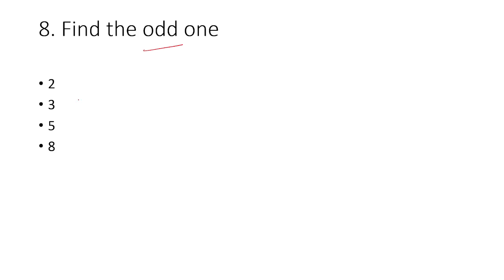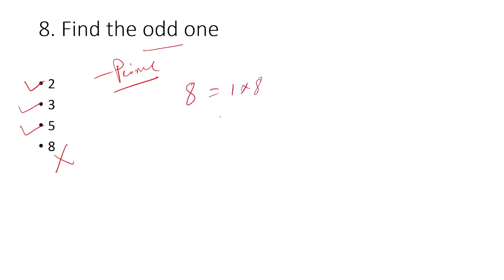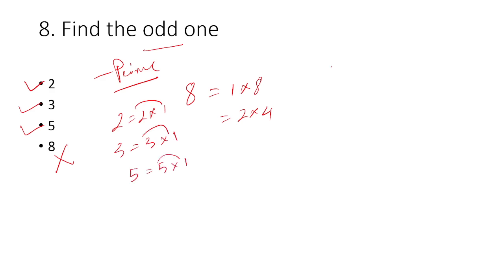Find the odd one out. The concept here relates to prime numbers. A number which has only two factors is called a prime number. So the answer relates to identifying which number is prime among the options given.